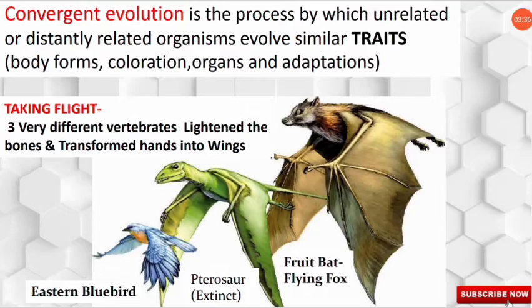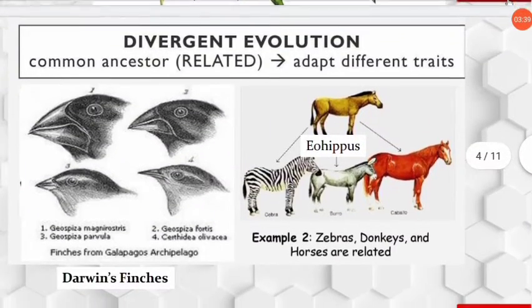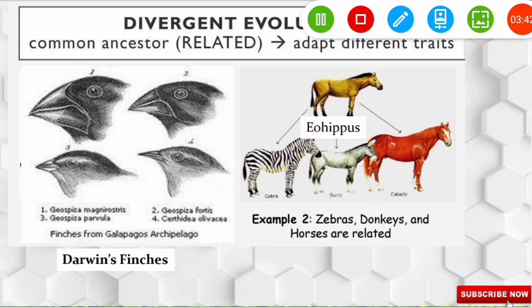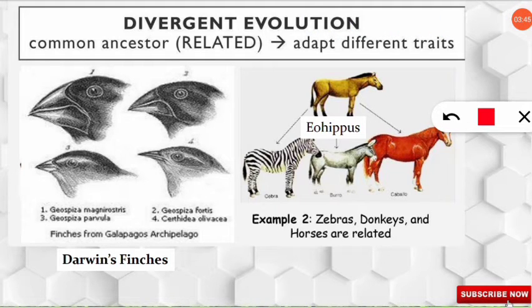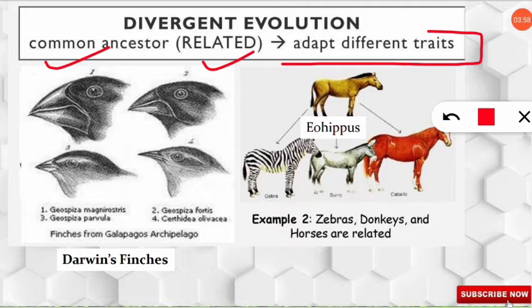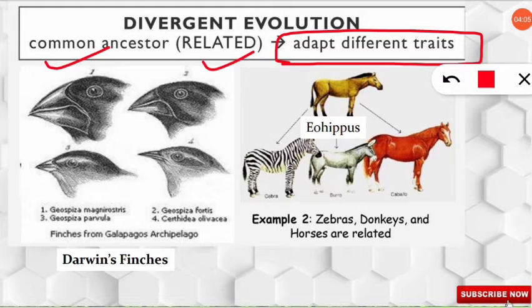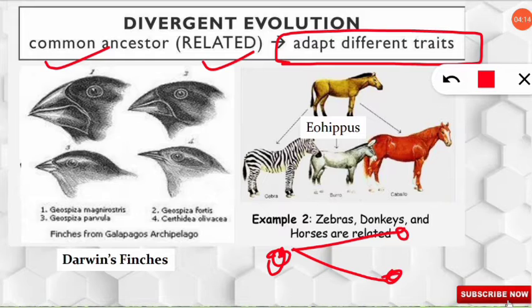Now let's look at divergent evolution. In convergent evolution, the ancestors were different; in divergent evolution, the ancestor is common or related. But as time goes and evolution takes place, the organisms adapt different traits or different characteristics — they diverge. The diagram shows one common ancestor, and over time, two different kinds of traits develop from it. That's why it is known as divergent evolution.